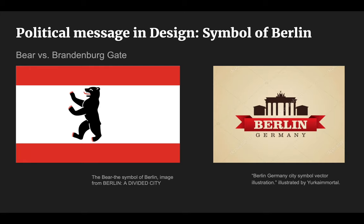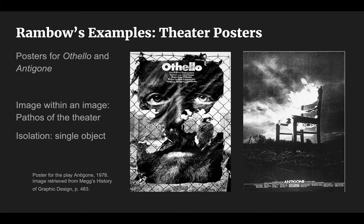Let's see how Rimbaud communicated a message and poetry with images by looking at his posters. These are the posters for Othello and Antagon. Othello was produced in 1978 and describes the pathos of the play as an image framed within an image, as if we were watching a movie on a screen. For Antagon, a single object — a chair — expresses the isolation of the main character. The short life and fate of the protagonist are described with a consuming fire, narrating with symbols the story of the play.